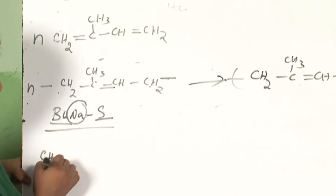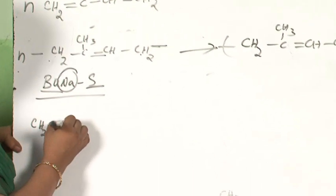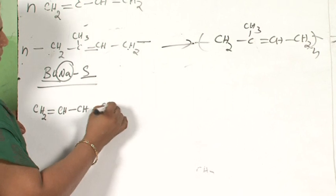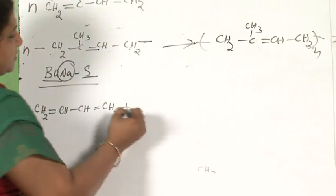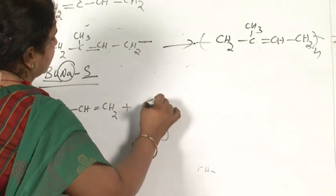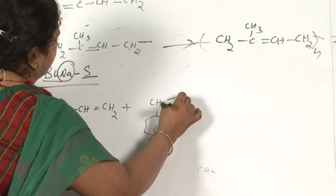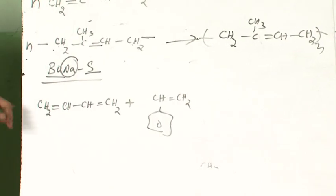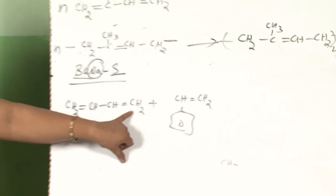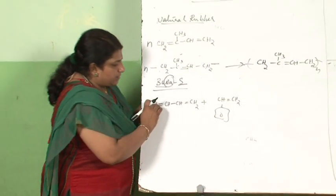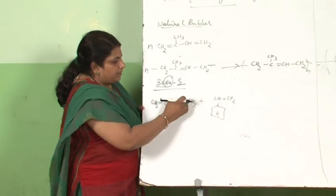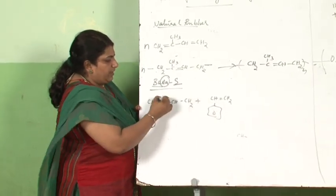1,3-butadiene — you are familiar: CH2=CH-CH=CH2. Styrene is also familiar: C6H5-CH=CH2. When these two polymerize, the terminal double bonds of butadiene break and the styrene double bond also breaks.